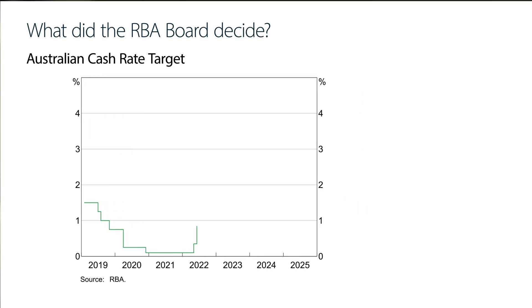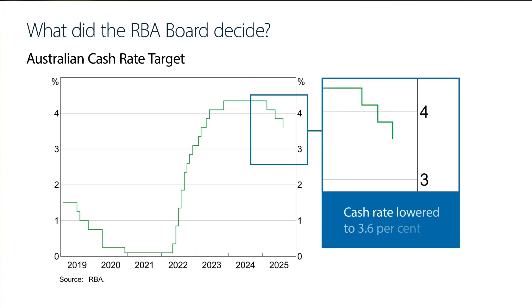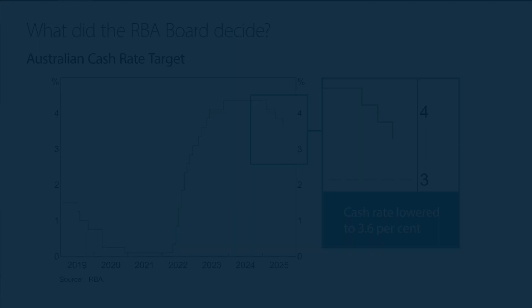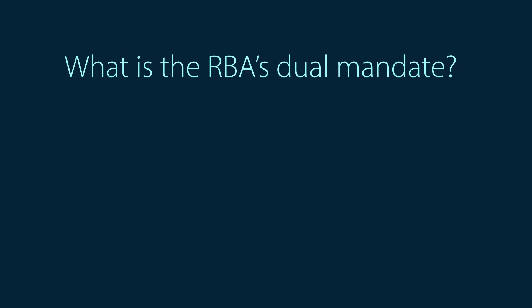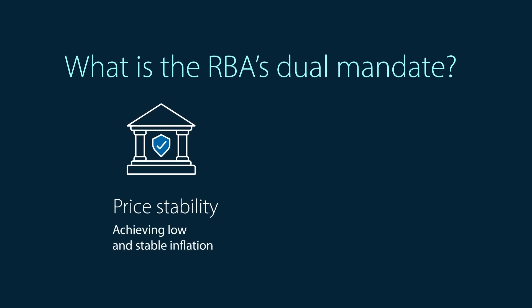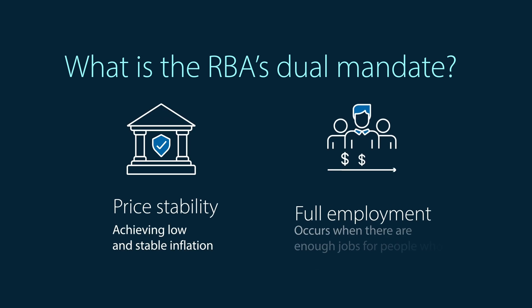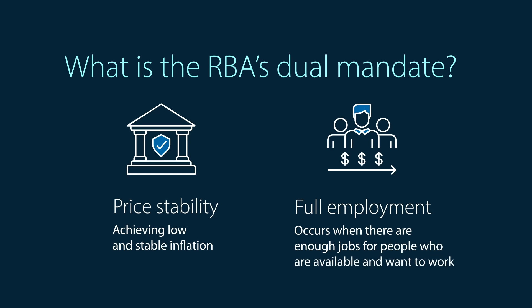So a lot is happening in the global economy at the moment. But what about the Australian economy? The RBA's Monetary Policy Board decided to lower the cash rate to 3.6% at its August meeting. The RBA's monetary policy decisions are guided by two key objectives, sometimes called a dual mandate: the first is price stability, or low and stable inflation, and the second is full employment, which means that people who want a job can find one without having to search for too long.